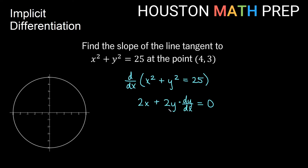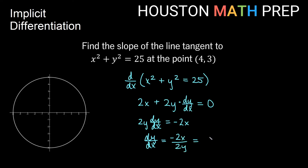Now this is the expression we get from implicit differentiation, differentiating straight through the equation. What we need to do to find dy/dx is solve — we need to get it by itself on one side. So we move the non-dy/dx term to the other side: 2y dy/dx equals negative 2x. Then to solve for dy/dx, we divide both sides by 2y, giving us dy/dx equals negative 2x over 2y. We can simplify that to negative x over y.